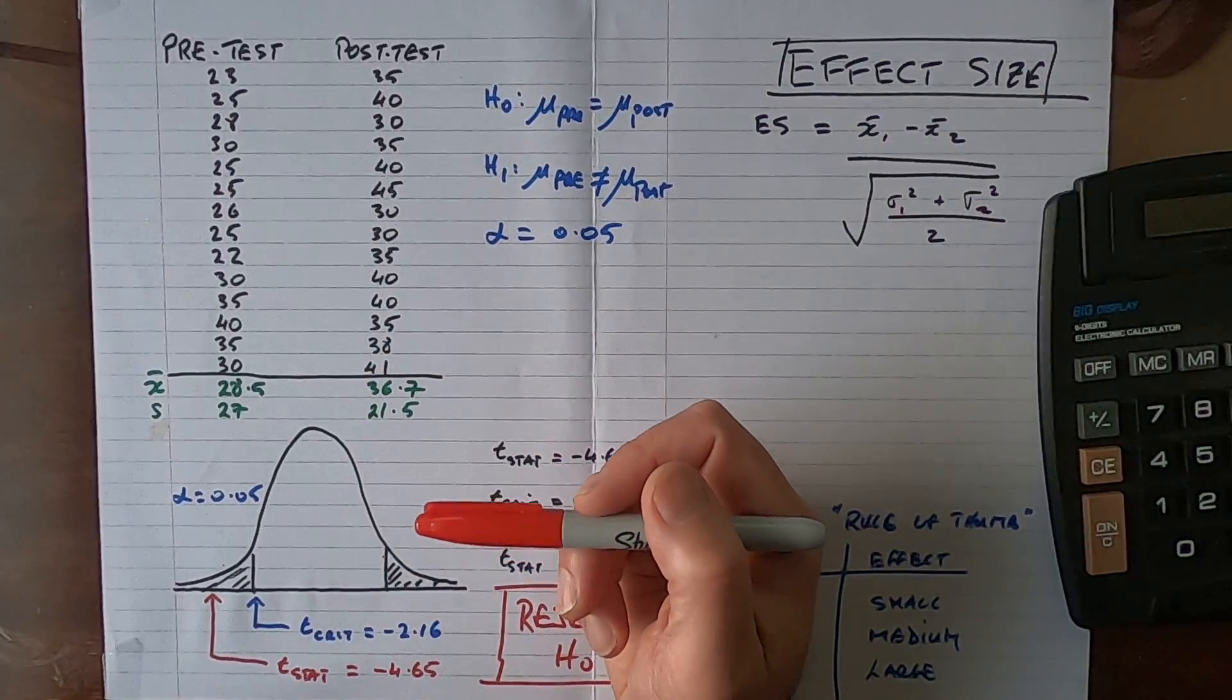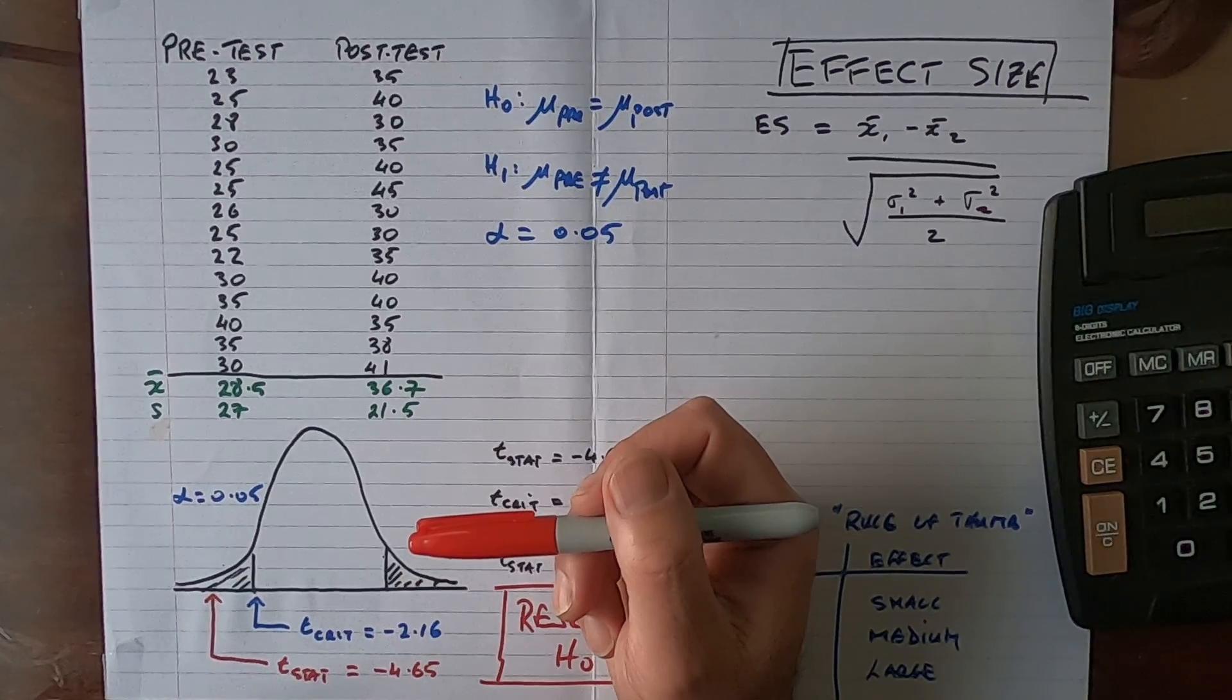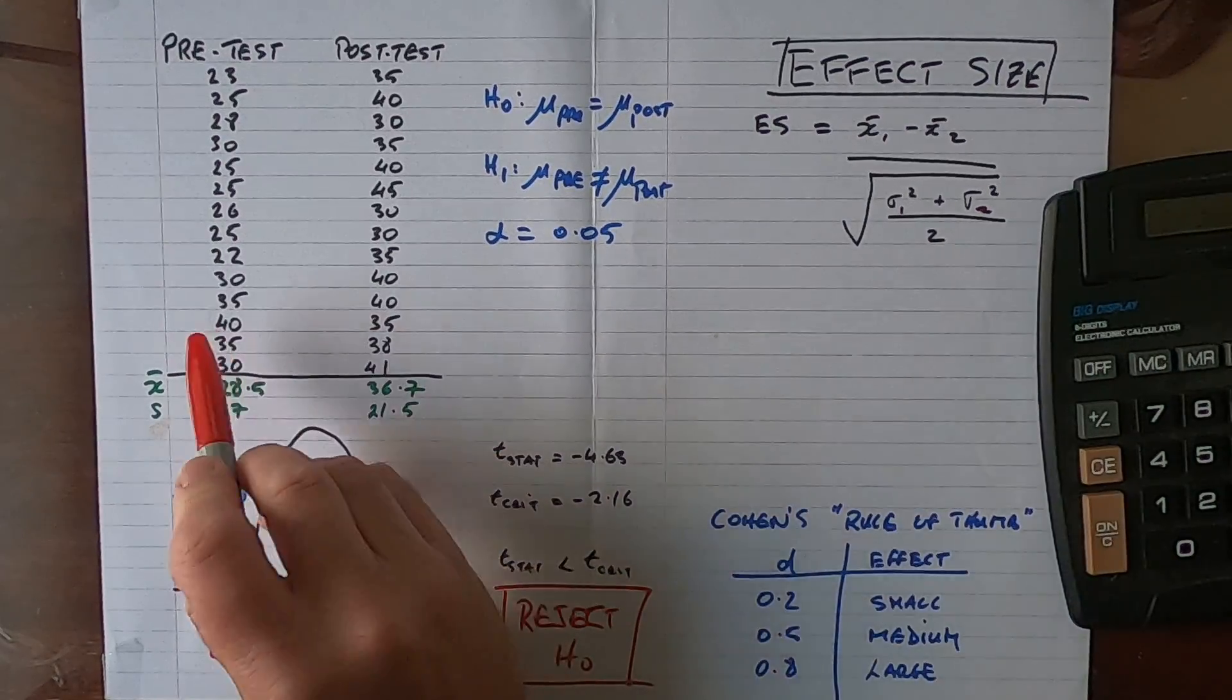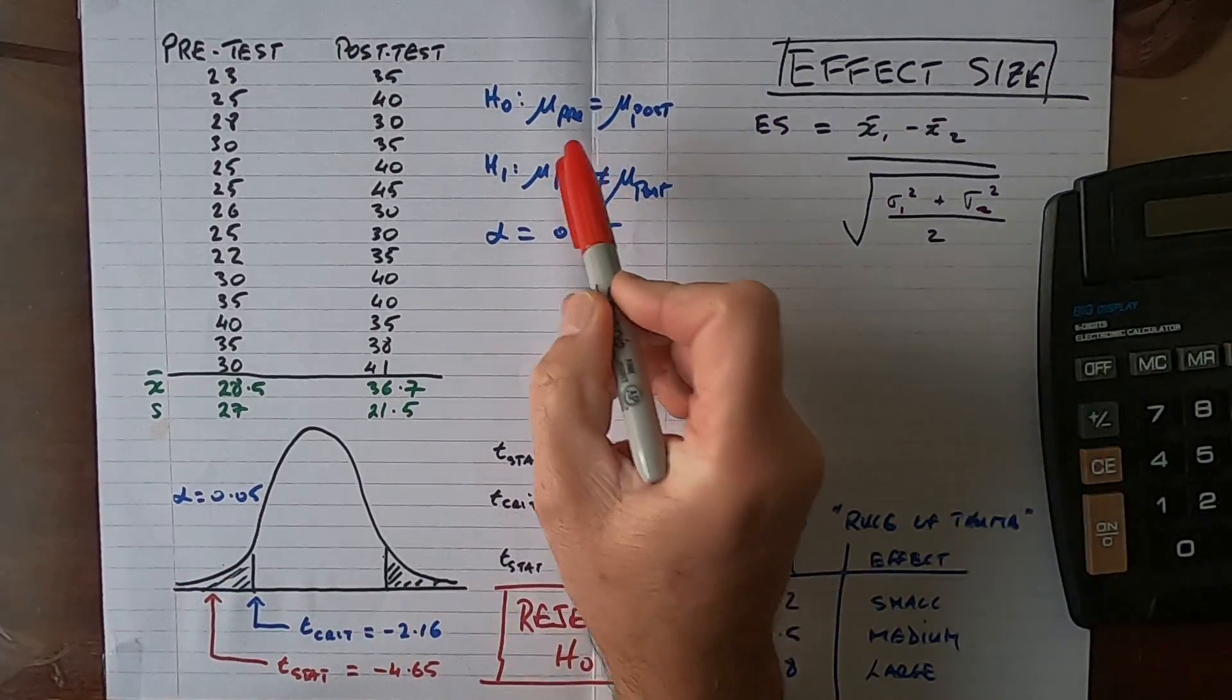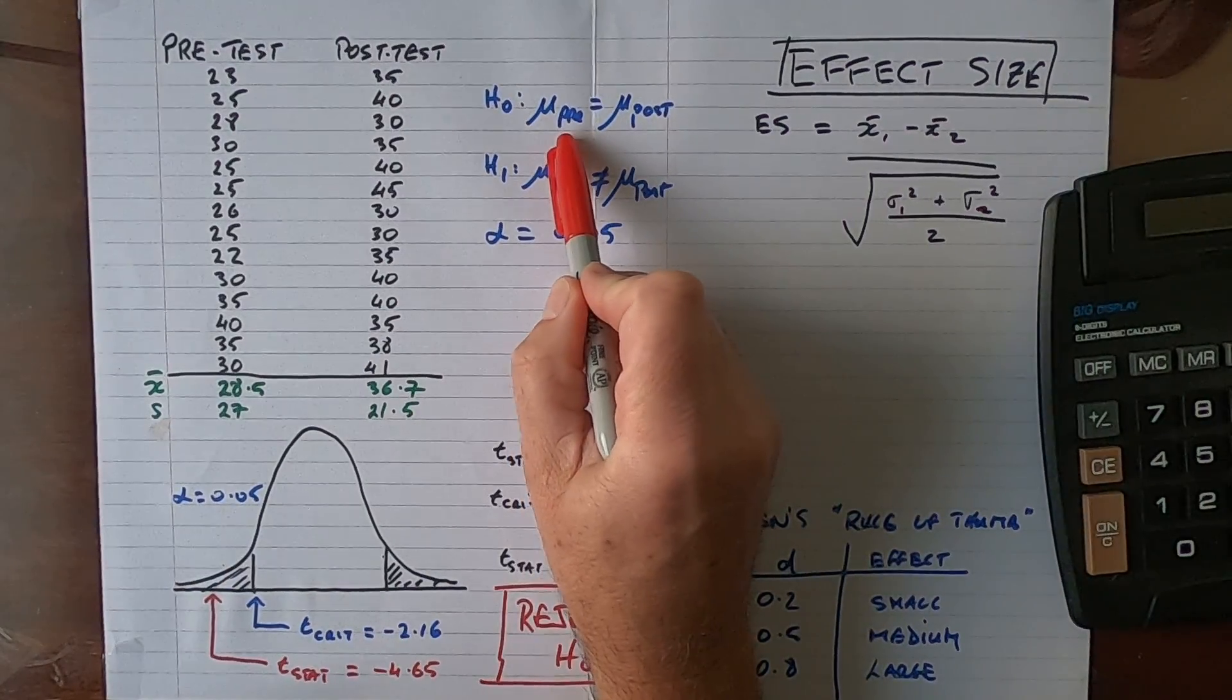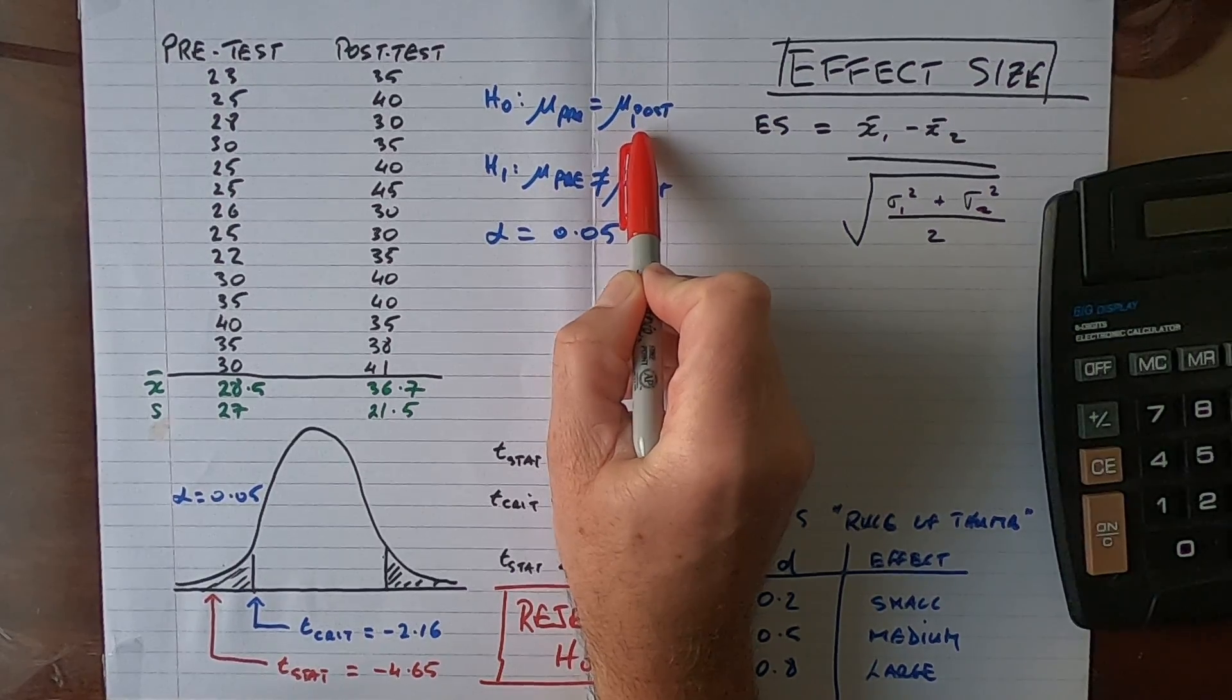I wanted to see if the student scores on average were different after the training intervention, to see if the training intervention has had an effect. My null hypothesis was that the population pre-test score is equal to the population post-test score.